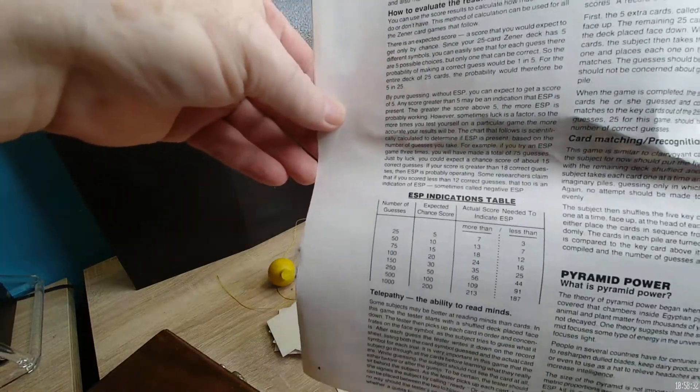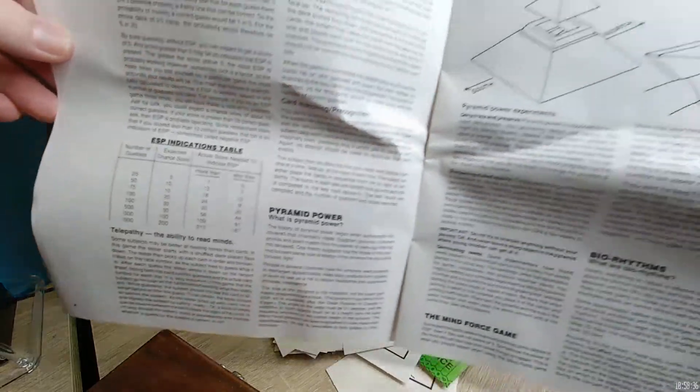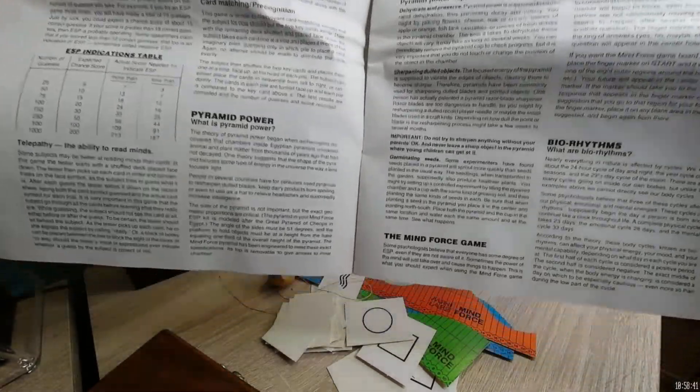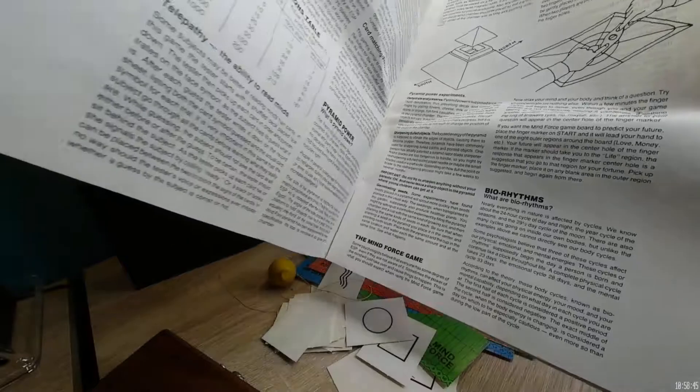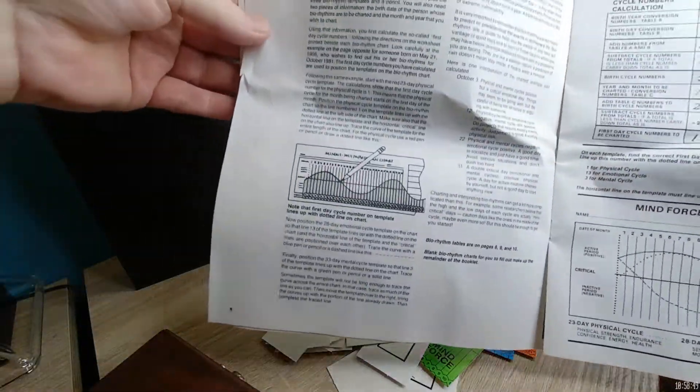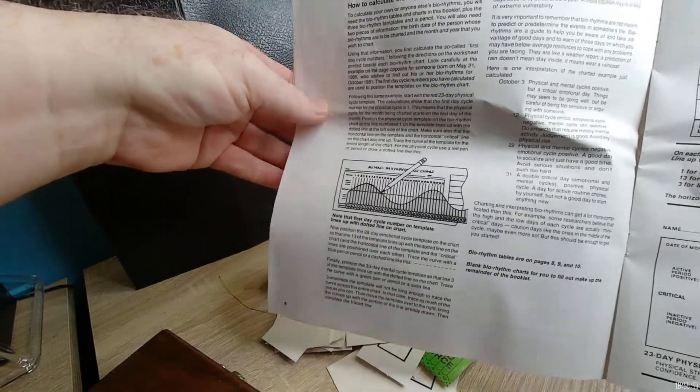Clairvoyance, matching cards, pyramid power - here's the pyramid power we are talking about. Here's that diagram, the little pyramid you get. It talks about the bio rhythms, the mind force, all those things that are here in the kit which is very inclusive. It shows you how to calculate your bio rhythms.